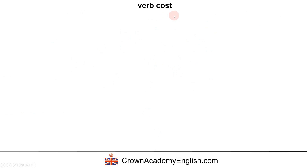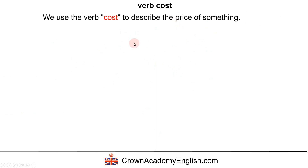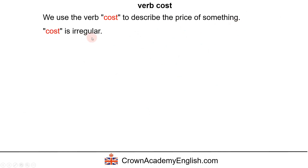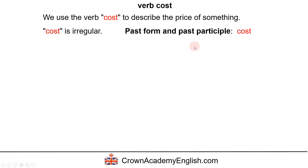The verb cost. We use the verb cost to describe the price of something. Cost is an irregular verb, and the past form and past participle is also cost.